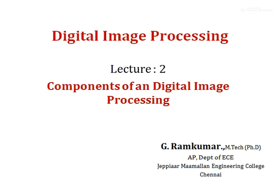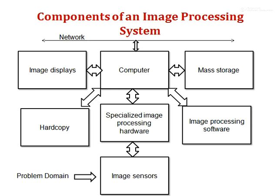In this session, we are going to see the components of digital image processing — that is, what are the elements present in it. Let us see the block diagram of components of digital image processing. In this block diagram, we have image sensors, specialized image processing hardware, computer, image displays, mass storage, hard copy, and image processing software, all connected with a network.